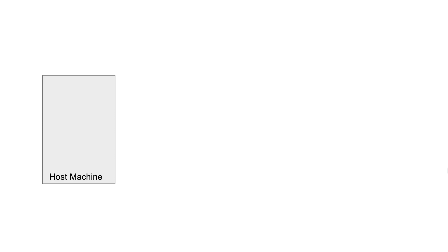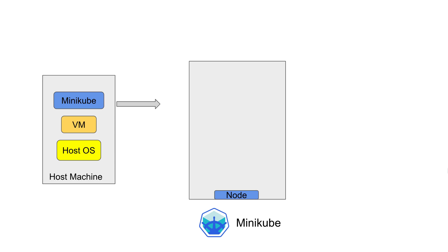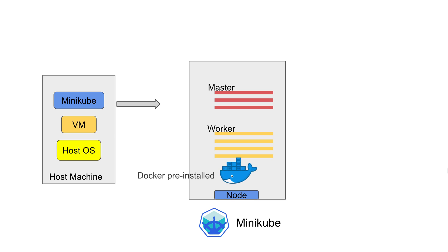To understand this with the help of an image: let us say this is your host machine or your system, and you will have some operating system like Windows, Mac or Linux. There will be a virtual machine or a virtual environment set up over your operating system, and then inside this virtual machine we will have Minikube. Minikube will create a single node, and inside that single node we can have master and worker processes. We also have Docker pre-installed on this node, so you do not have to install Docker separately.